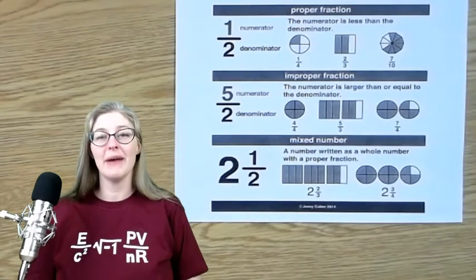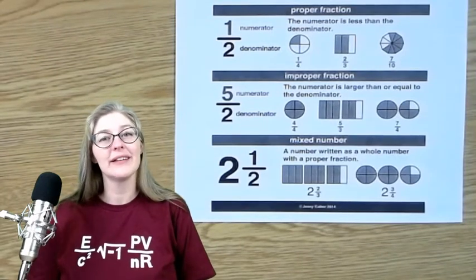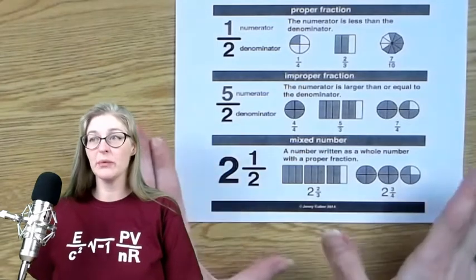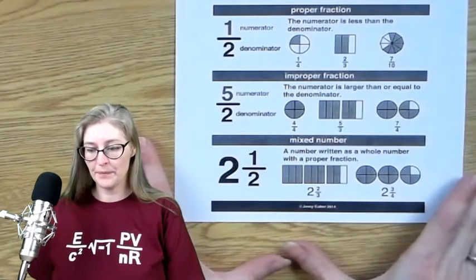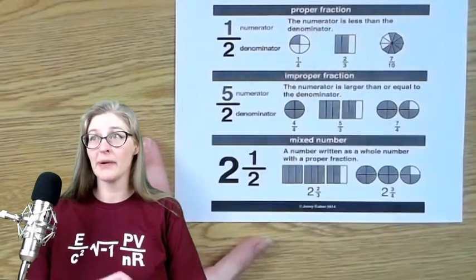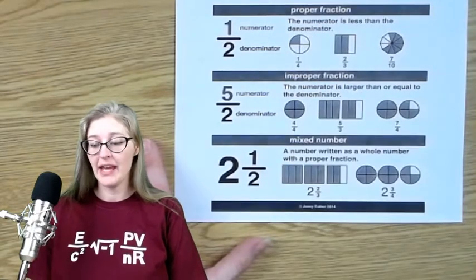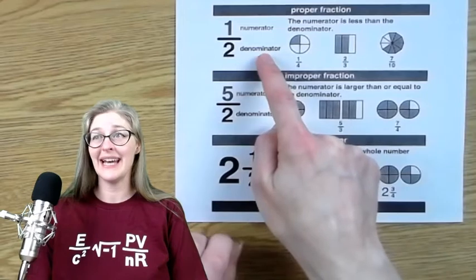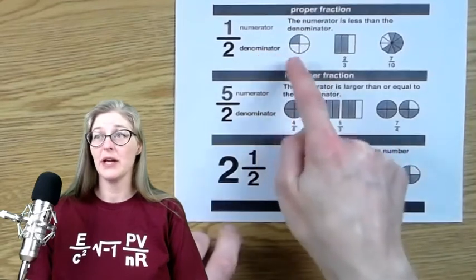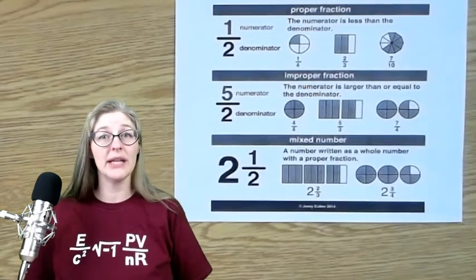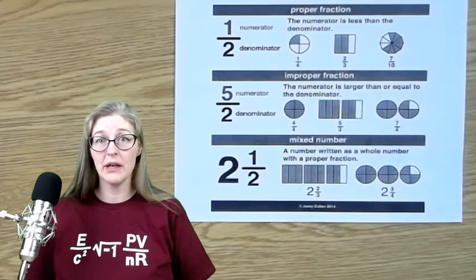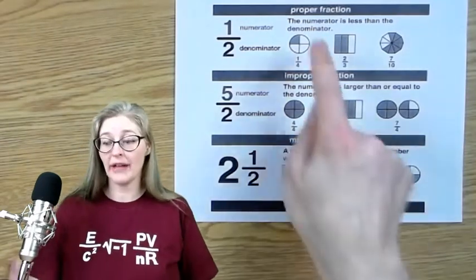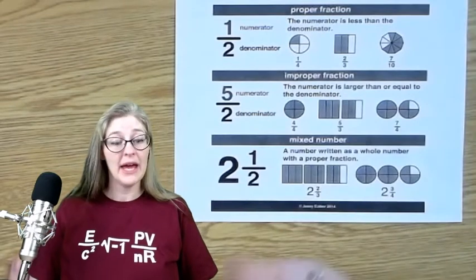Hello, welcome back. We're going to talk a little bit more about fractions today. So just a quick review: a proper fraction is one where the numerator is less than the denominator. So I don't have a complete whole piece — I have less than one. That is called a proper fraction.